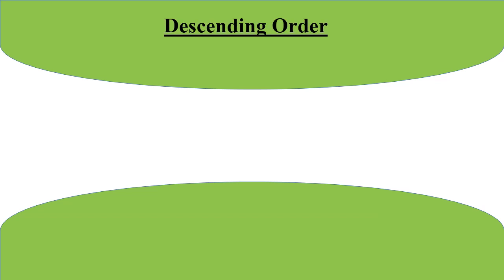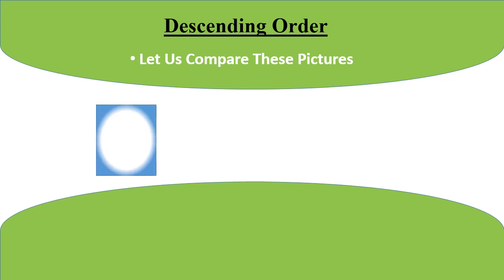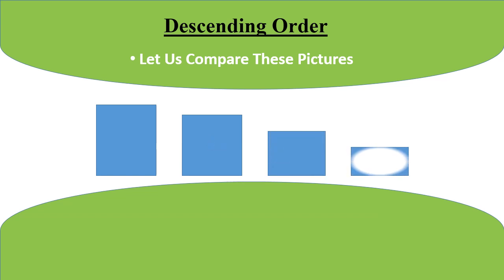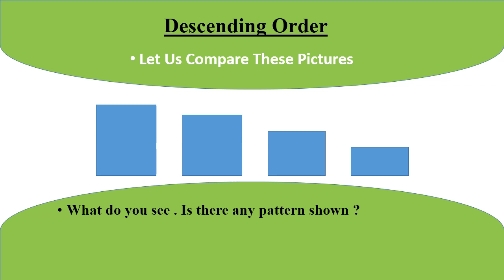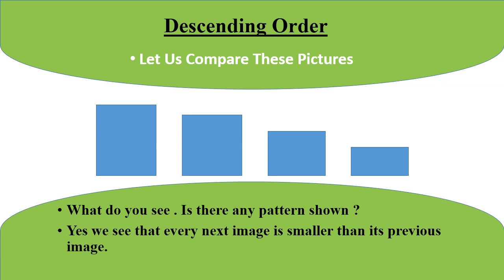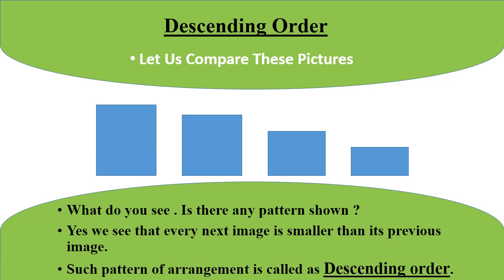Now, we will discuss about descending order. Again, let us compare these pictures. Children, what do you see? Is there any pattern shown? Yes, we see that every next image is smaller than its previous image. Correct. Such pattern of arrangement is called descending order.